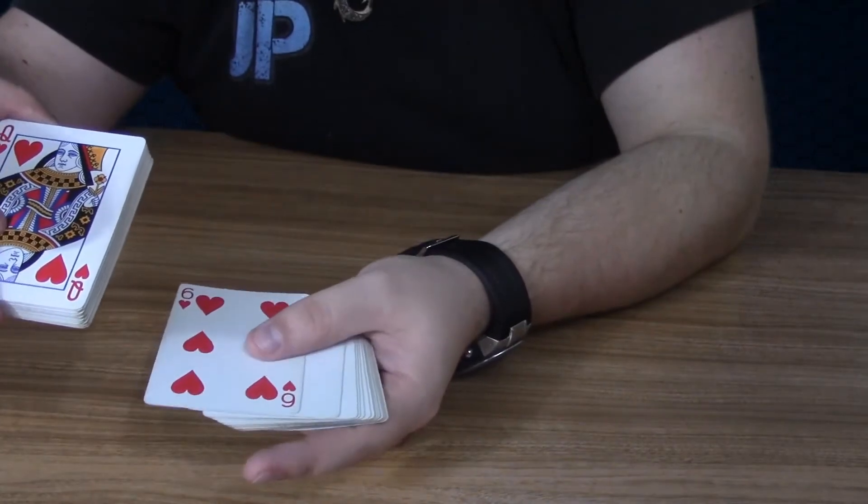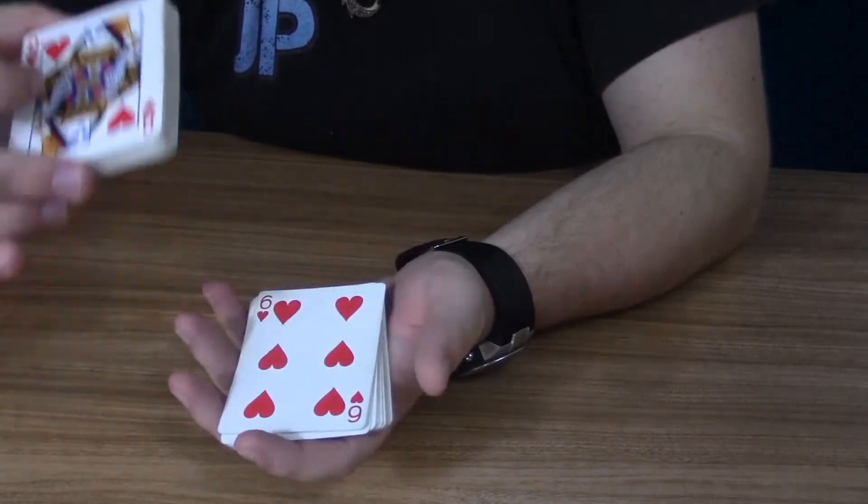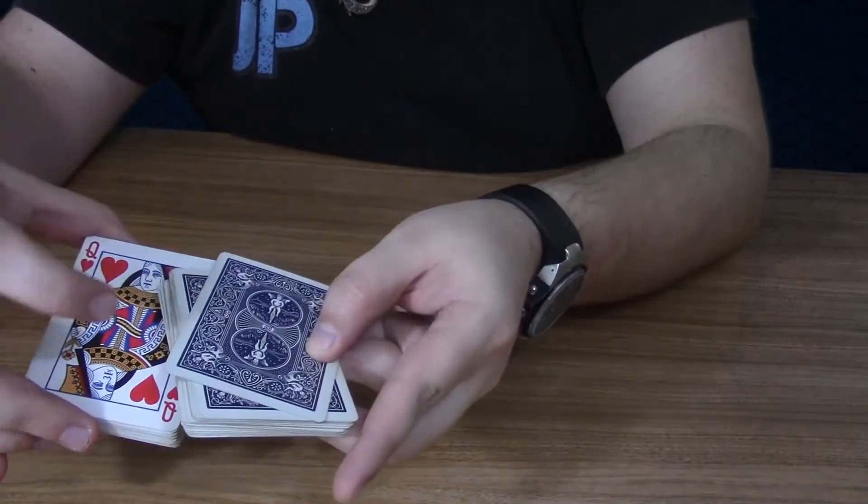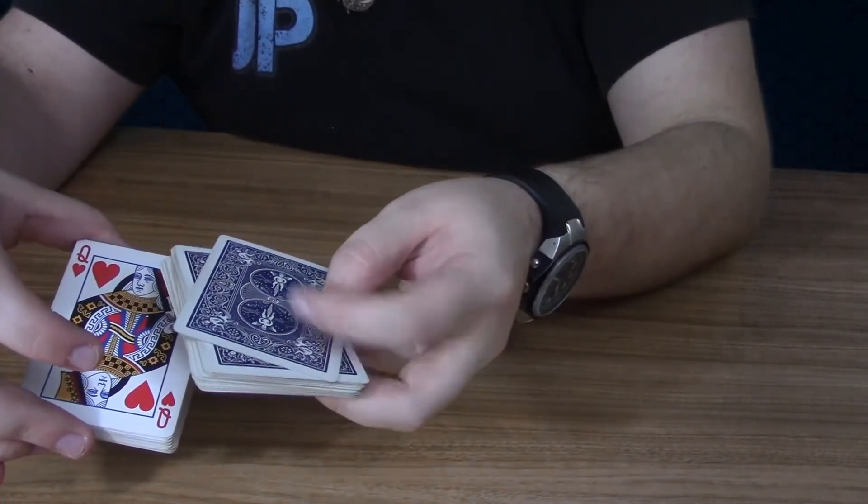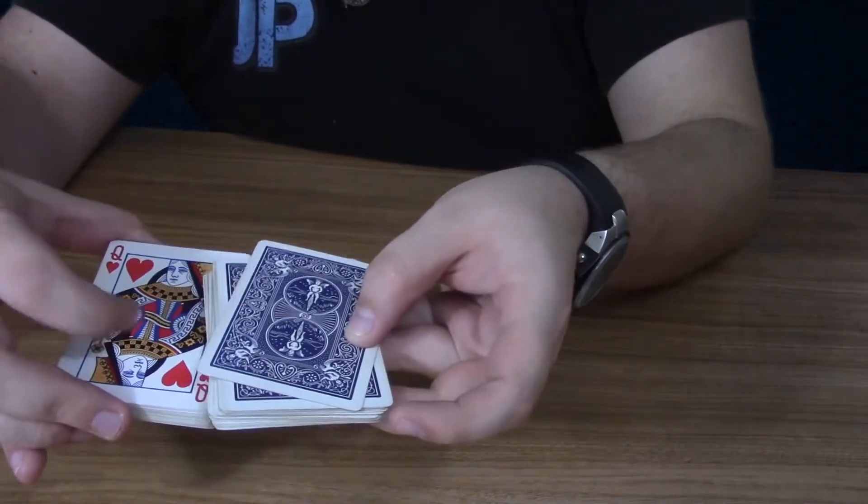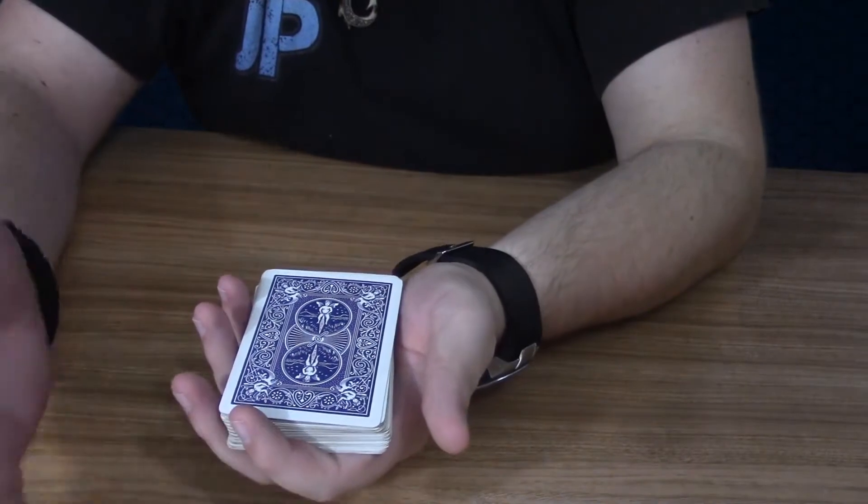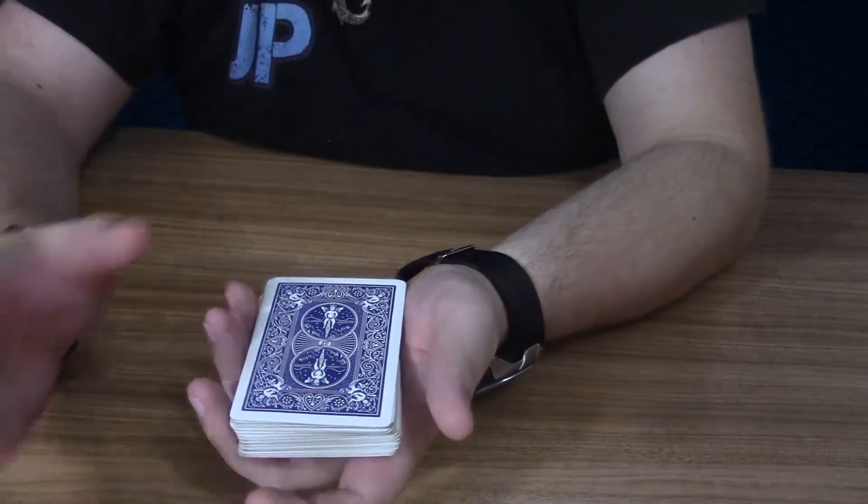So now I've just got the blanks over here, this card's over here, and you're just going to put this half on top. So the cards with the backs will be on top of these cards, just like that. And when you do that, the trick is pretty much done.